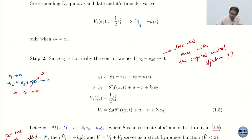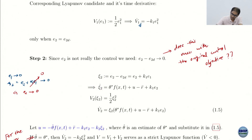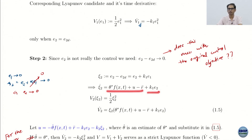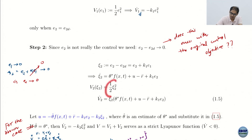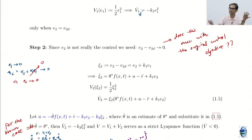We take the derivative of ψ₂ to find the dynamics. ψ₂-dot = E₂-dot + K₁E₁-dot = [θ*f(x,t) + u − r-double-dot] + K₁E₂. In backstepping, every time we add to the Lyapunov function the square of the backstepping error. So V₂ = ½ψ₂². V₂-dot = ψ₂ · ψ₂-dot. The total V for the system is V = V₁ + V₂.